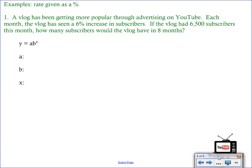Let's look at some examples. In each of these examples, our rate is going to be given as a percent. So if we're going to calculate our multiplier, we're going to have to either look at 1 plus r or 1 minus r. As you read through the problem, you need to determine if you're looking at growth or if you're looking at decay. As we read this, it says a vlog has been getting more popular through advertising on YouTube. Each month, the vlog has seen a 6% increase in subscribers.